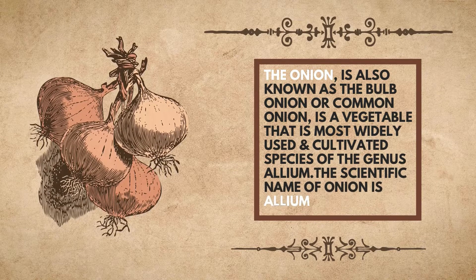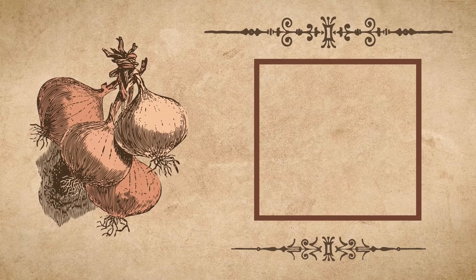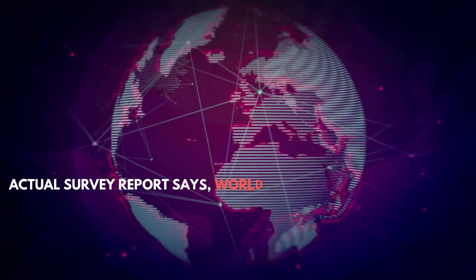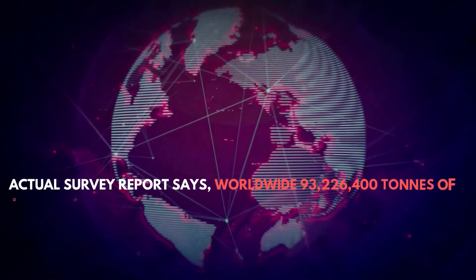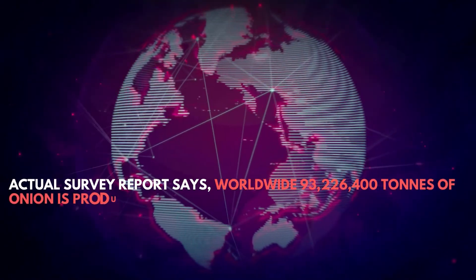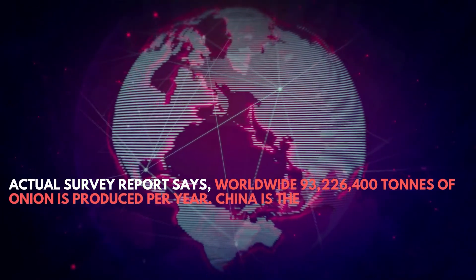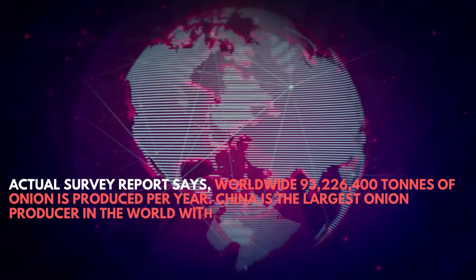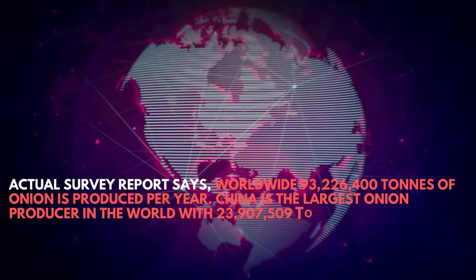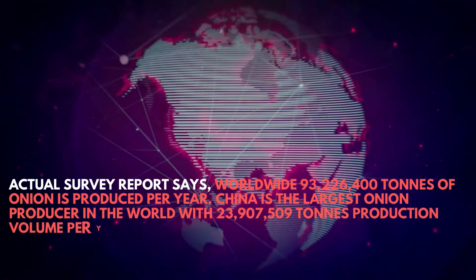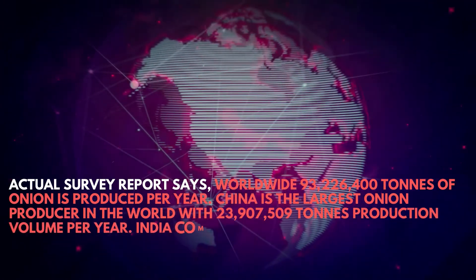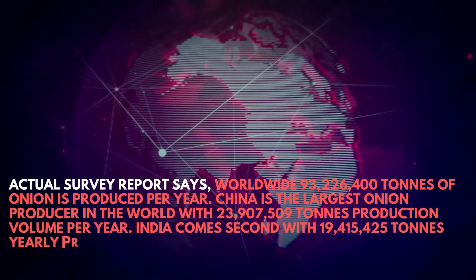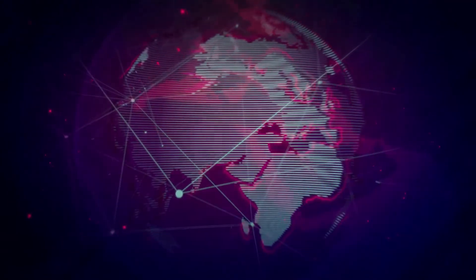The scientific name of onion is Allium. Actual survey report says worldwide 93,226,400 tons of onion is produced per year. China is the largest onion producer in the world with 23,907,509 tons production volume per year. India comes second with 19,415,425 tons yearly production.